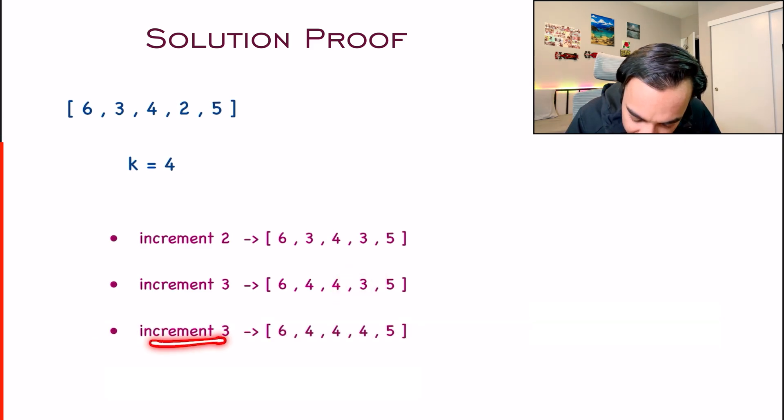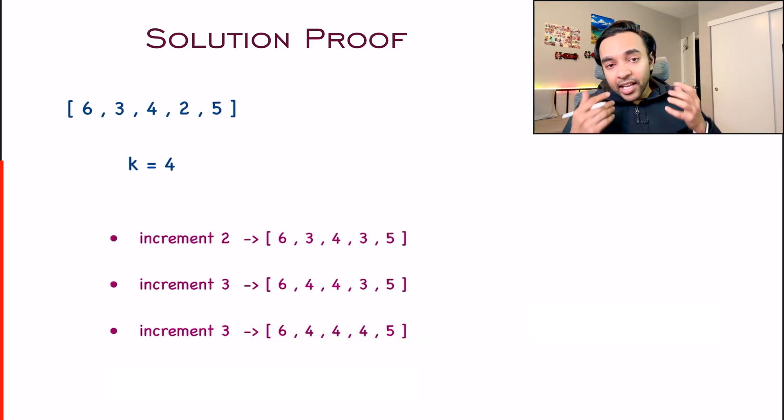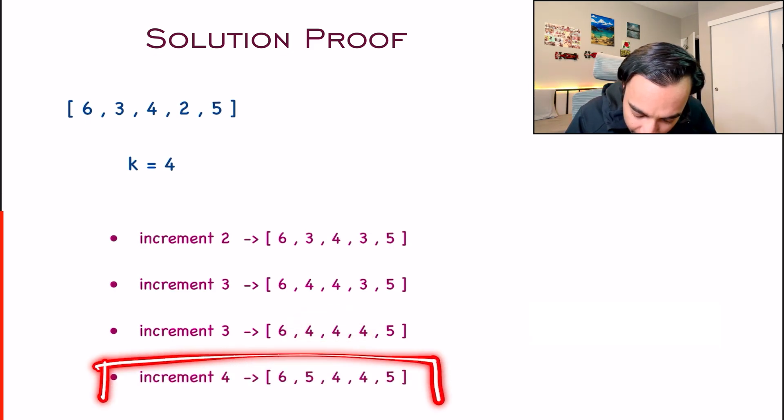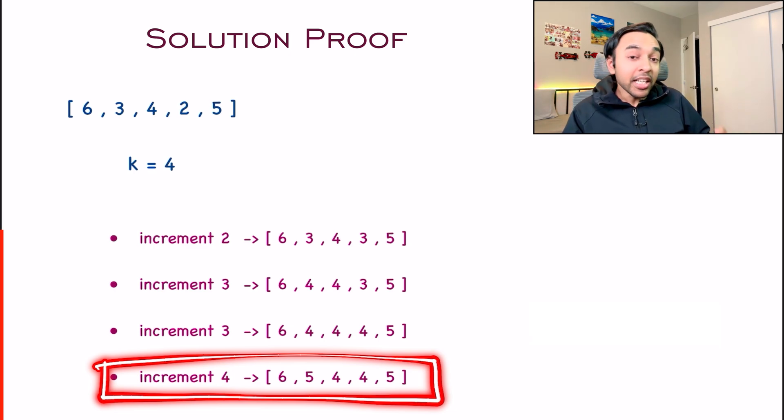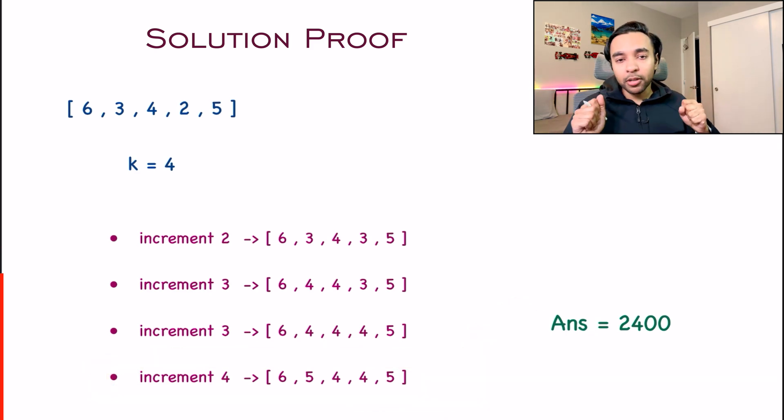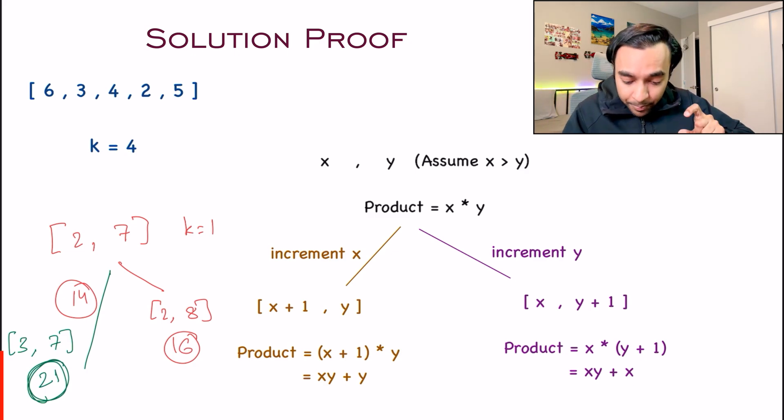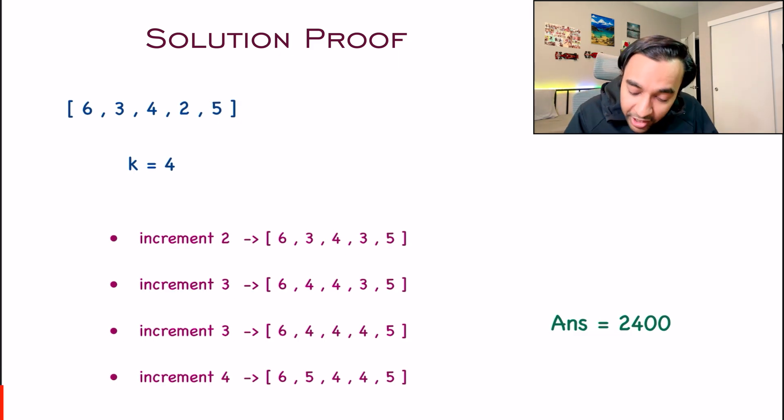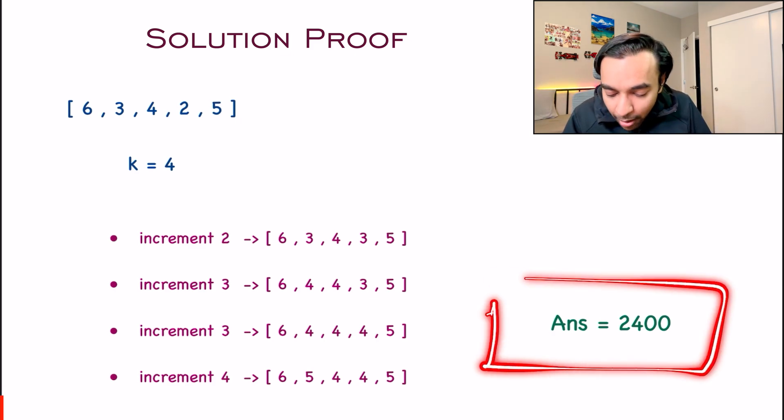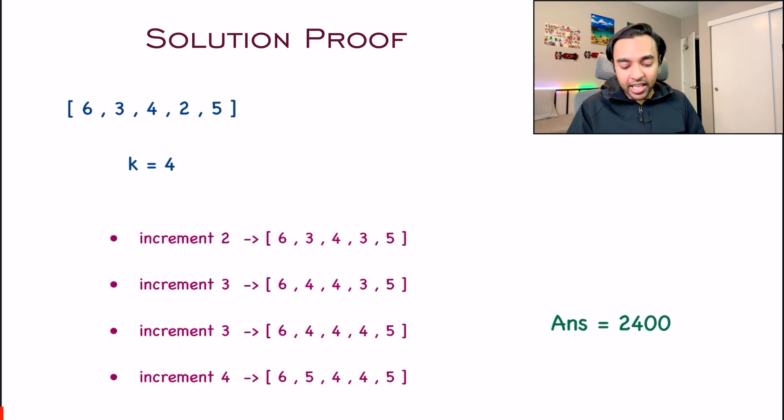In this array, once again, repeat the same process. Find the minimum element that is 4. So you can increment any of these 4s. And my final array becomes this. If you find out the product of all of these elements, you will get 2400. And that is the maximum product possible. So you can see that just by having a simple proof, I was able to apply the greedy technique on this particular problem. At every instance, I was being greedy. What I did was I chose the smallest number possible and incremented it by one. So using a greedy approach, we can correctly determine that this will be the maximum product possible out of the array when you are given k number of operations.